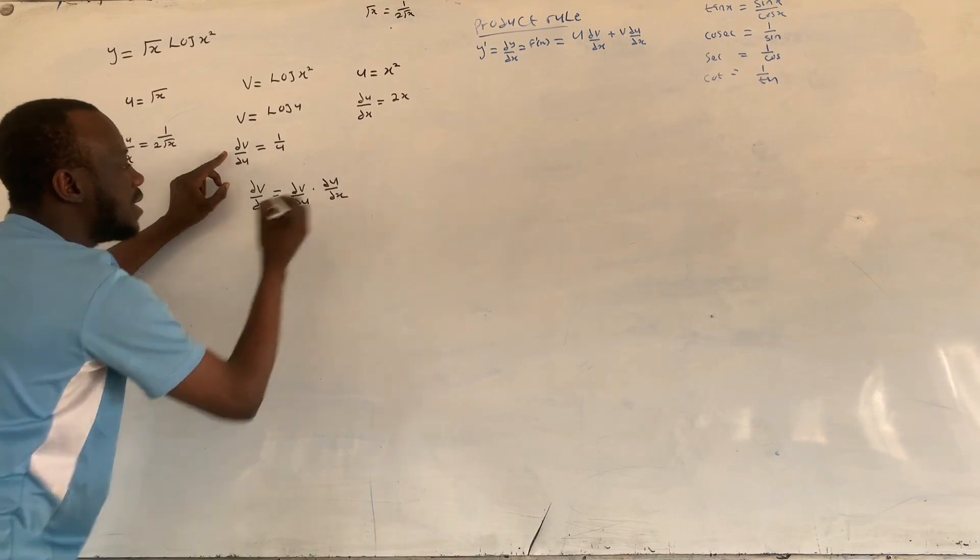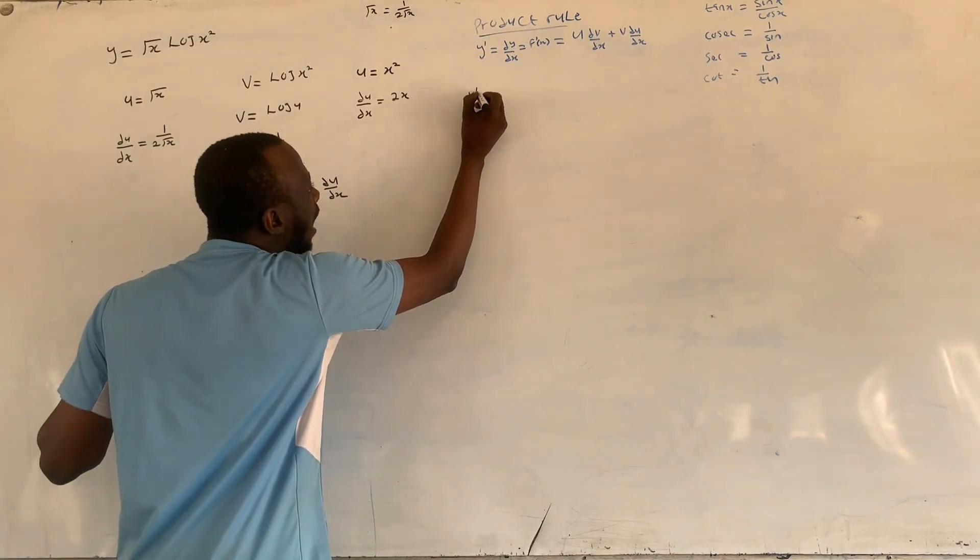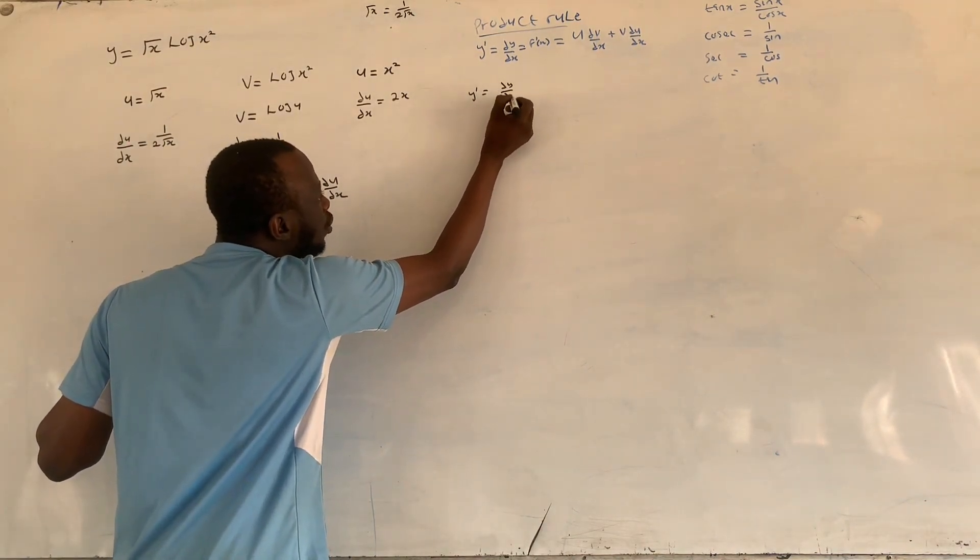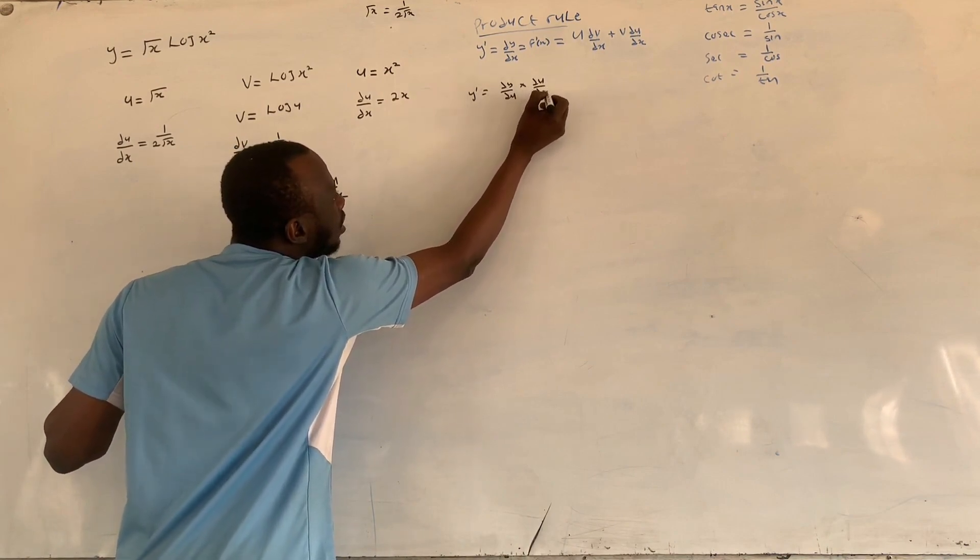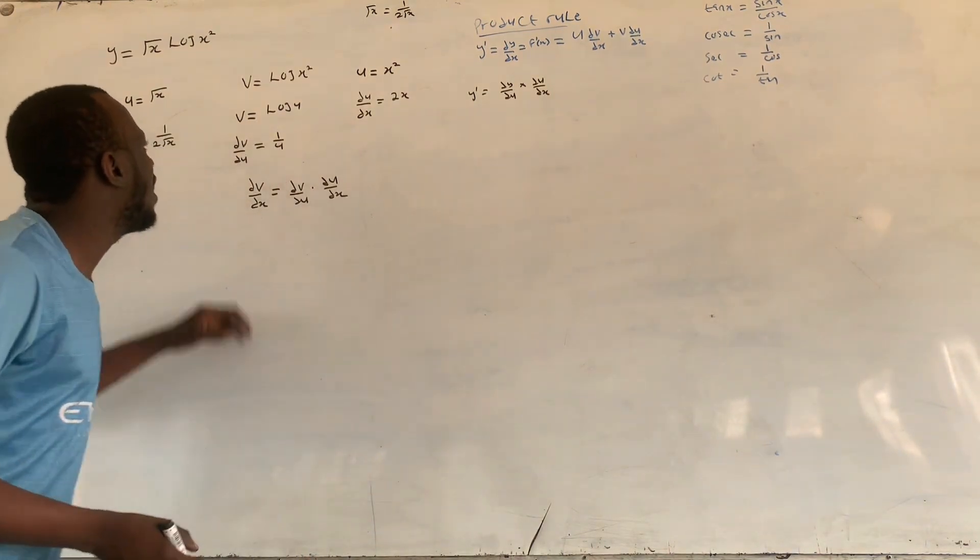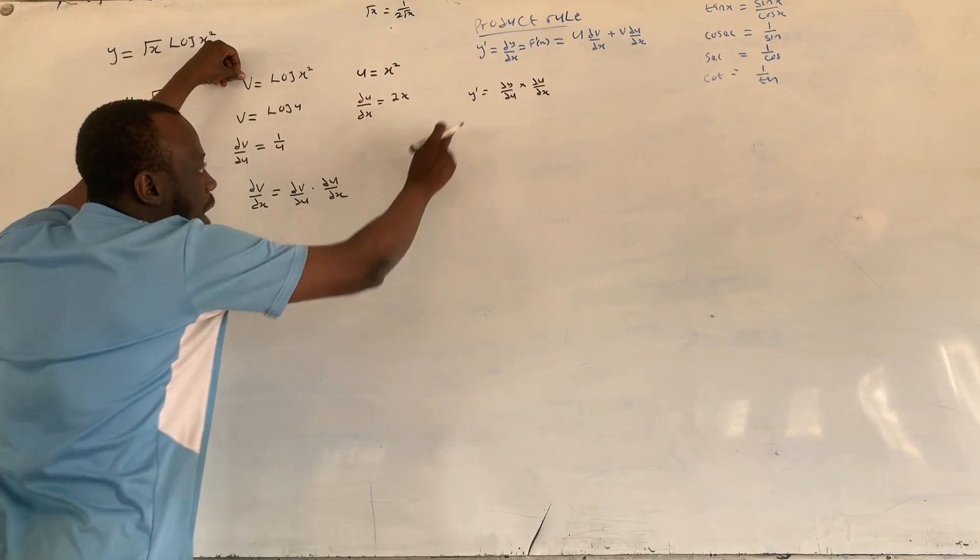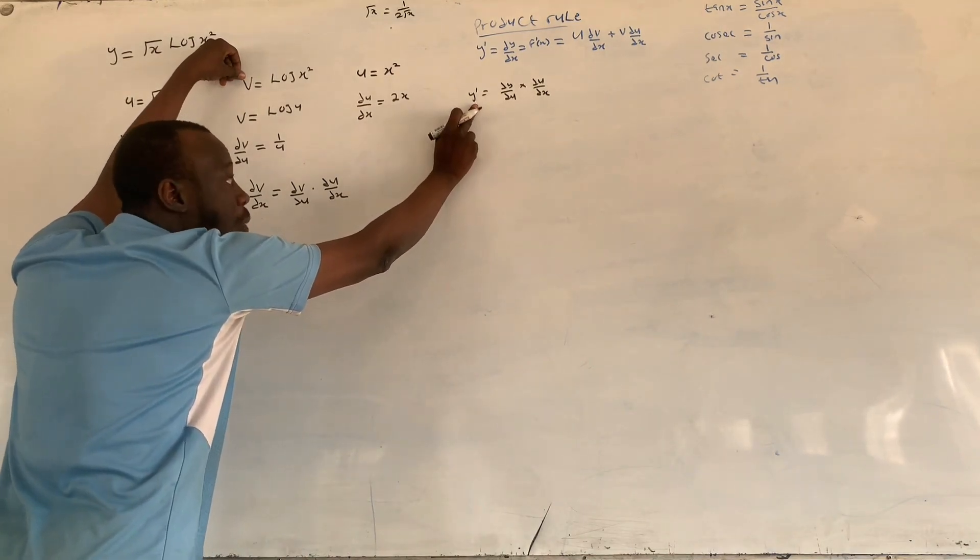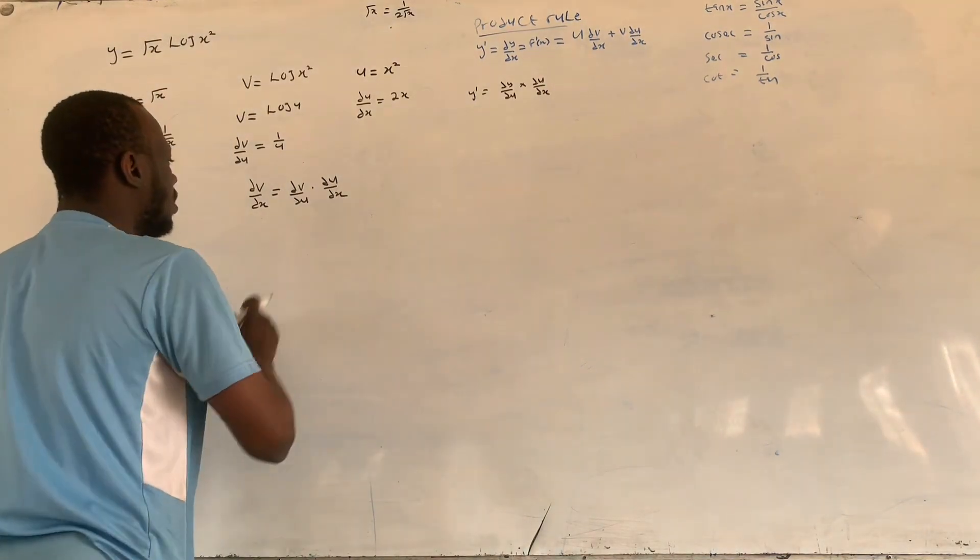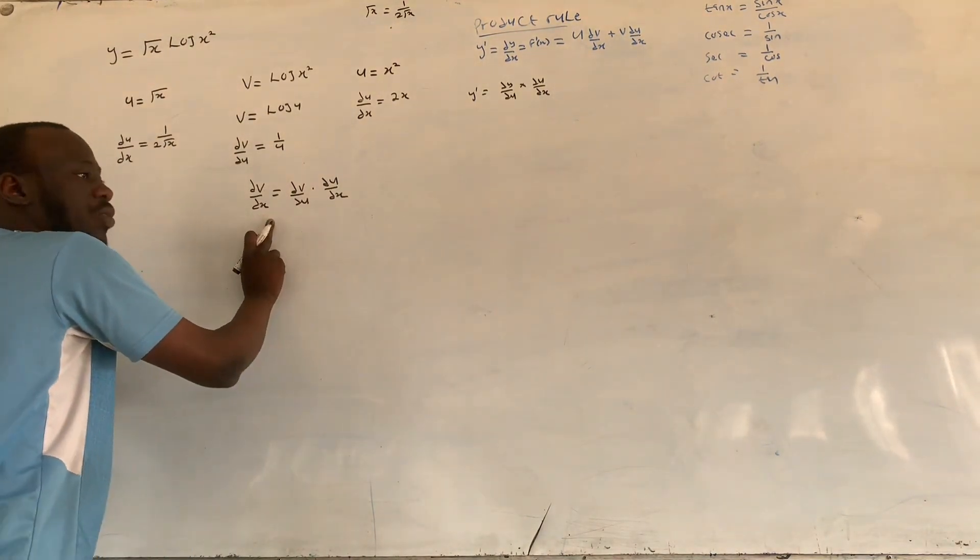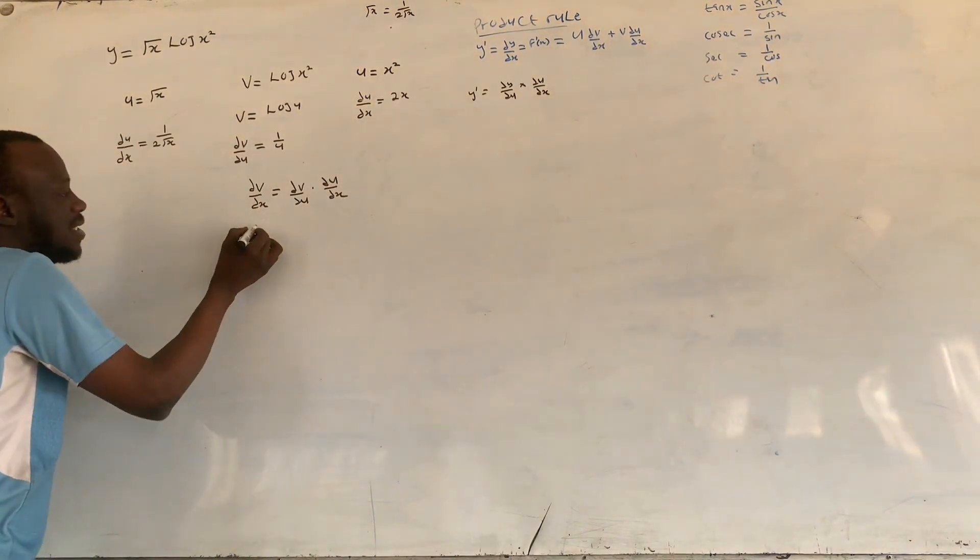y prime equals dv over du times du over dx. This is what chain rule is all about. So here we are dealing with v, when our v here is our y. That is our v here is our y. Remember we have the question is v, that's why here we say dv over dx, just like in this case y prime, it is now dv over dx in this case.